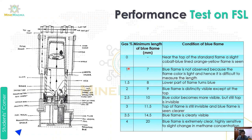At 1% gas, the blue flame is not observed because the flame color is light and hence it is difficult to measure the length. At 1.5% gas, the length is 1 mm and the thickness of the flame increases, with the lower part being more prominent.